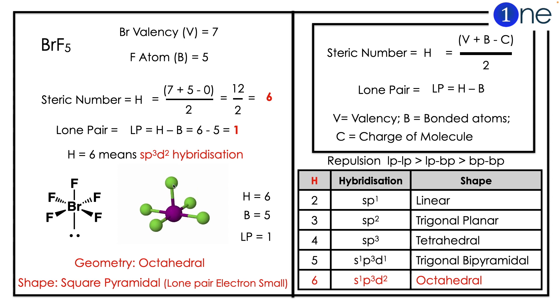The formula is (V + B - C)/2. Bromine valence is 7, bonded atoms is 5. Substituting in the formula: H = (7 + 5 - 0)/2 = 12/2 = 6. The lone pair is LP = H - B = 6 - 5 = 1.